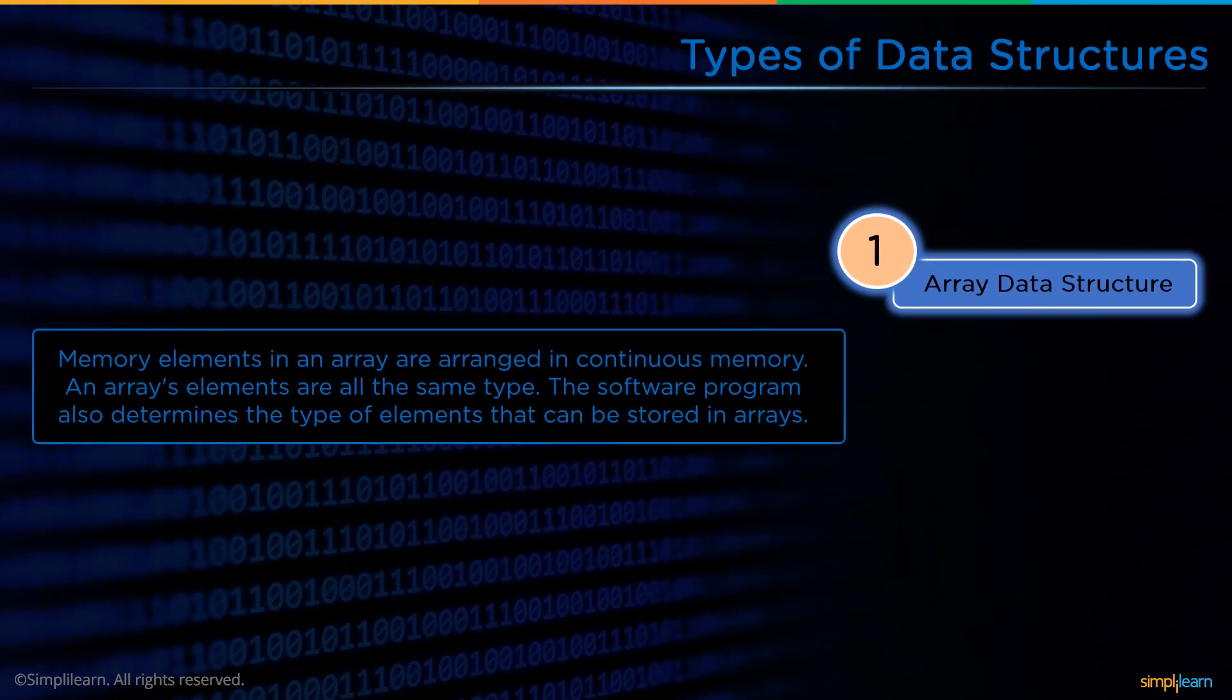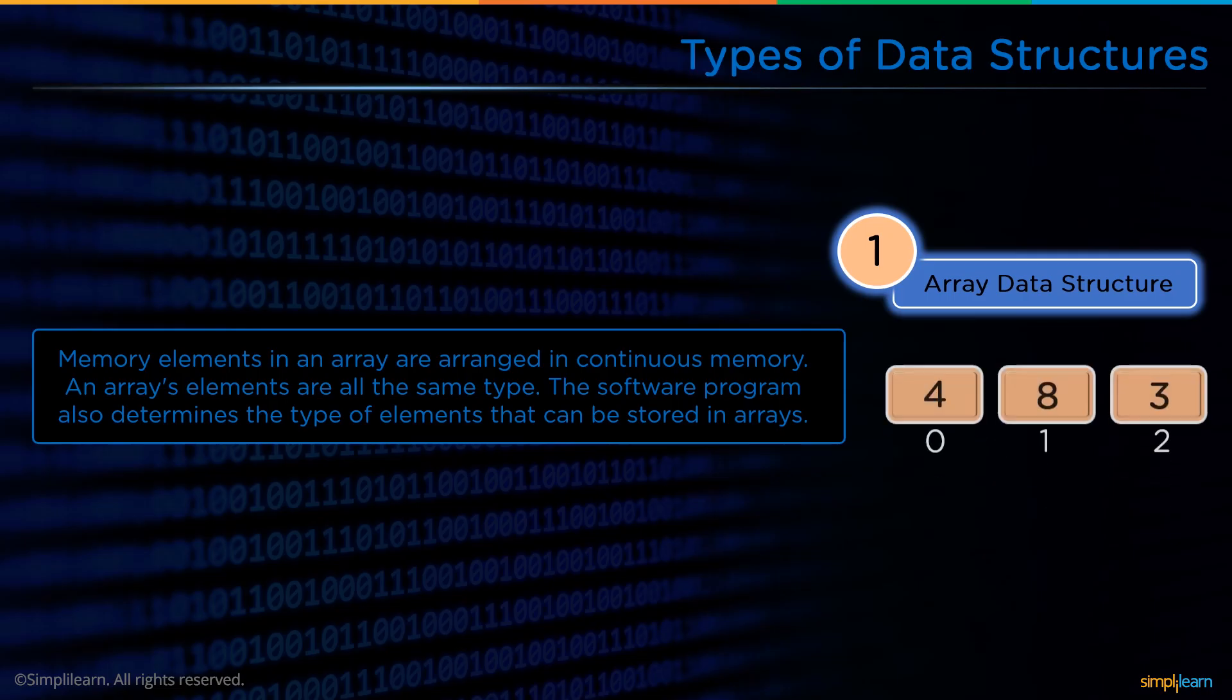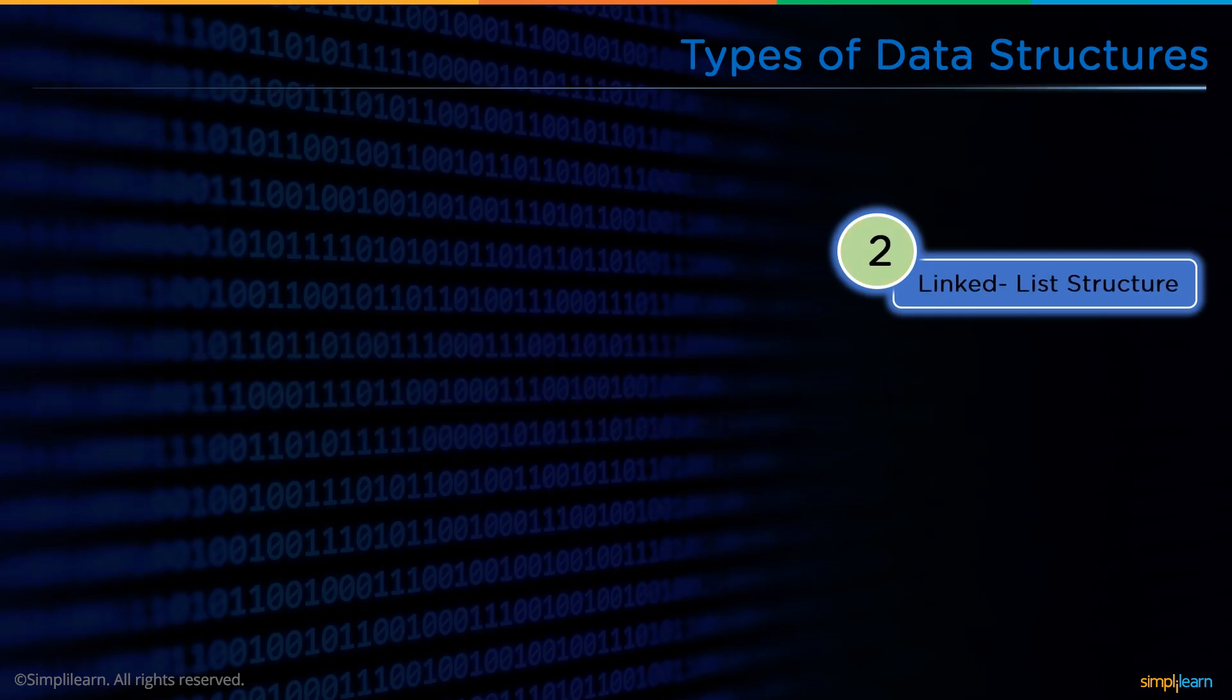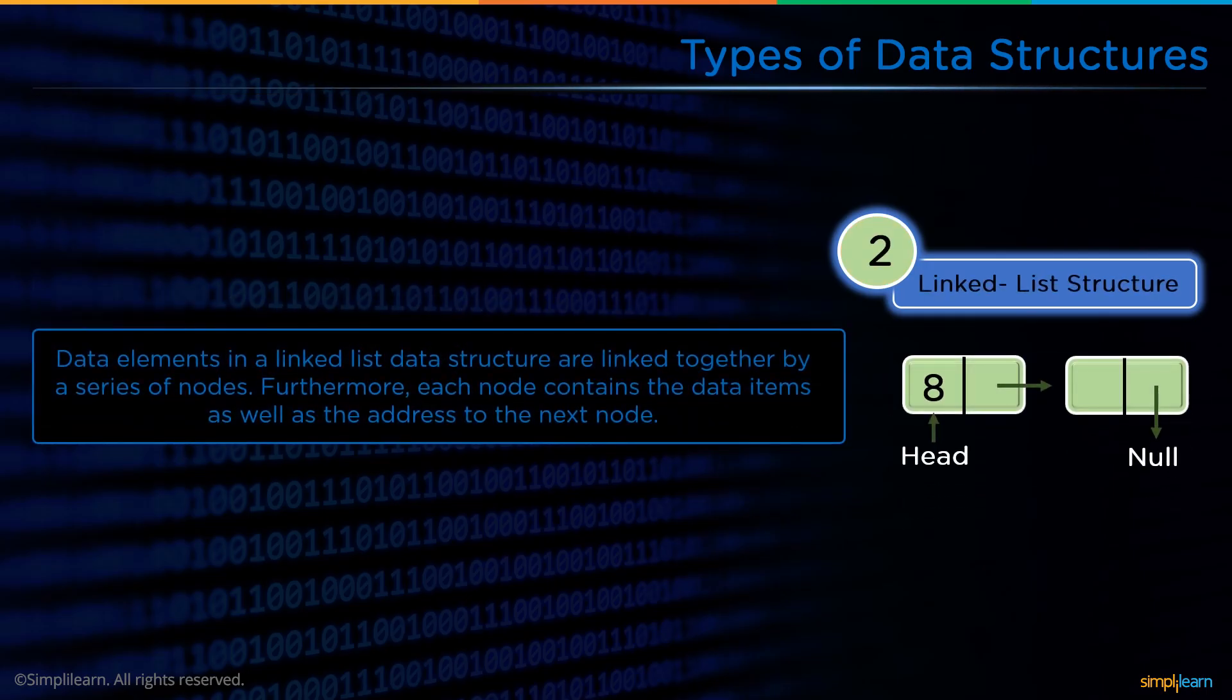In linear data structures we have four different types. The first one is the array data structure. Memory elements are arranged in a continuous order in arrays, and array elements are of the same type. The software program also determines the type of elements that can be stored in arrays. Linked lists are data structures where data elements are linked together by a series of nodes.